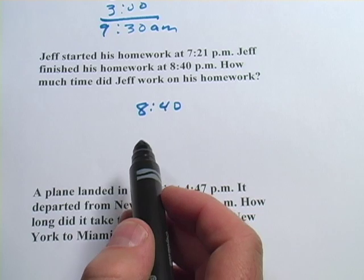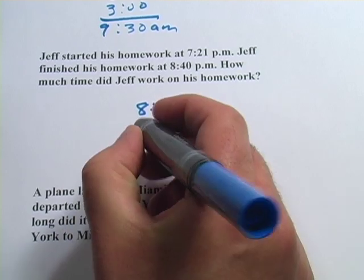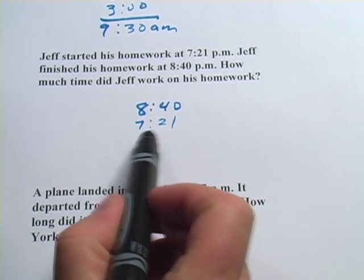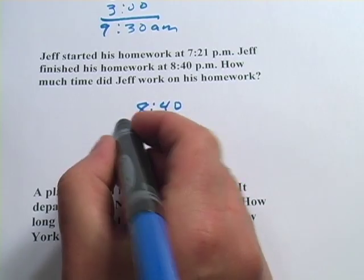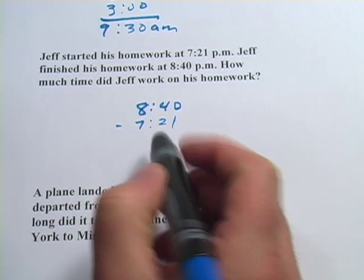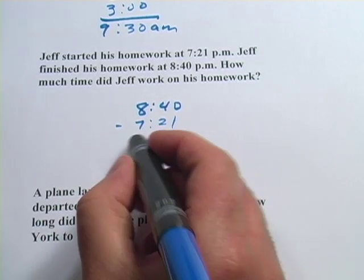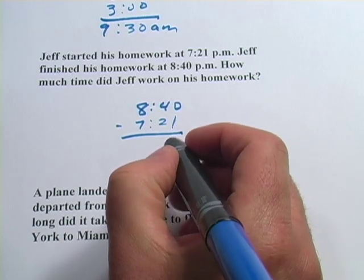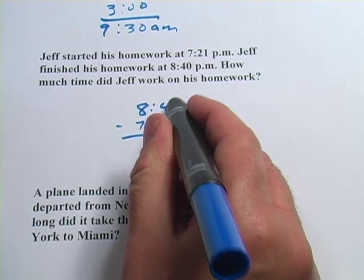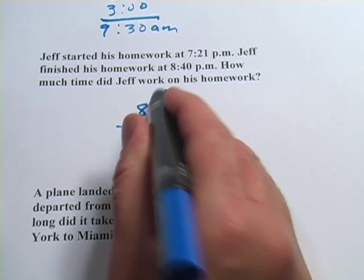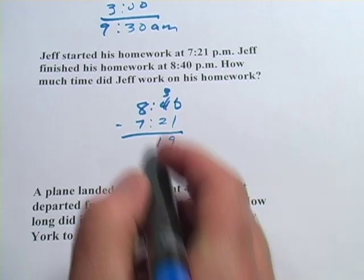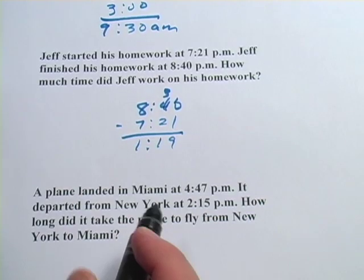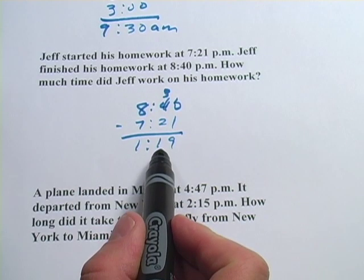8:40 is the later time, so it's kind of the bigger number, so I'm going to put that on top. Minus 7:21 — when I subtract the starting time from that, I'm going to get the elapsed time, or the time in between. So 40 minus 21 is 19, and 8 minus 7 is 1. It looks like an hour and 19 minutes passed.